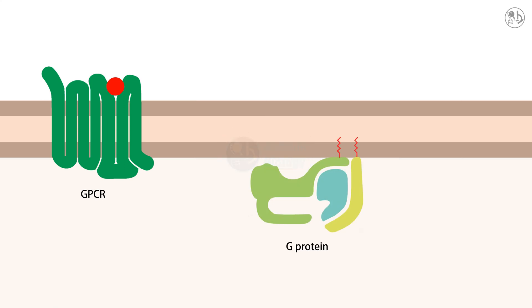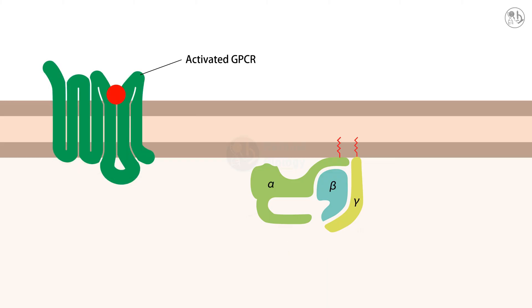The G-protein has three subunits: alpha, beta and gamma. When the receptor is activated, the alpha subunit exchanges its bound GDP for GTP and separates from the beta and gamma subunits.